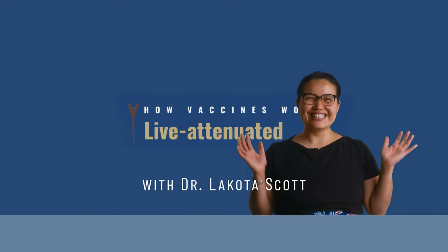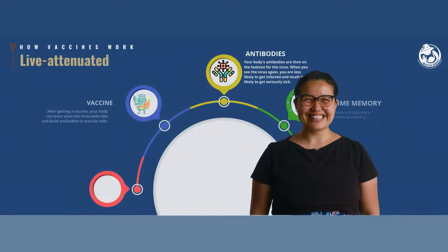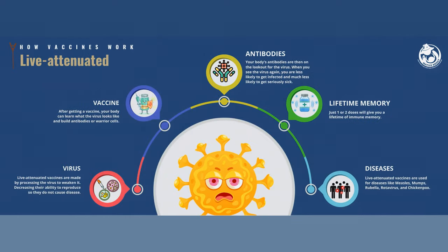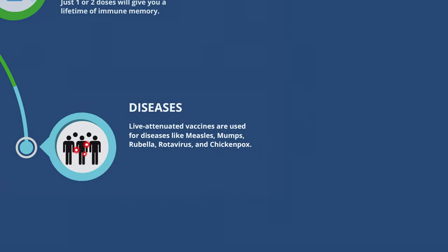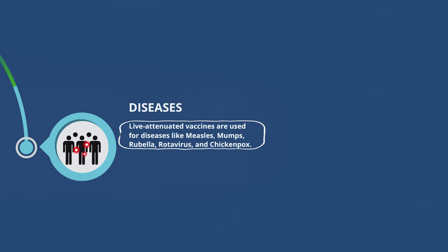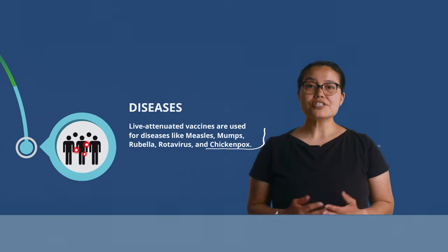Hi, I'm Dr. Scott. Let's learn about live attenuated vaccines. Most people have gotten these shots one or two times in their lives, and they are used for diseases like measles, mumps, rubella, rotavirus, and chickenpox.